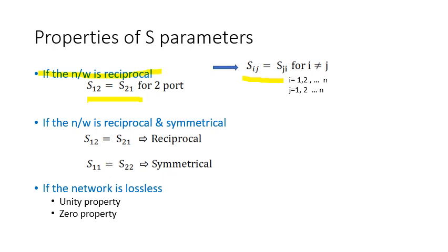What does symmetrical mean? Symmetrical means S11 is equal to S22. That means both the parameters S11 can be equivalent to S22. When is a network lossless? A network is considered to be lossless if it has a unity property and the zero property. Let's see those properties.